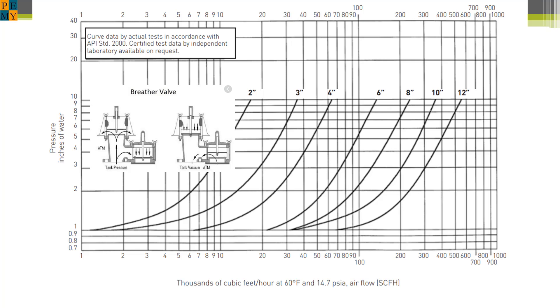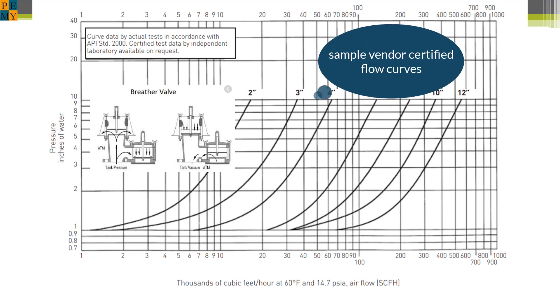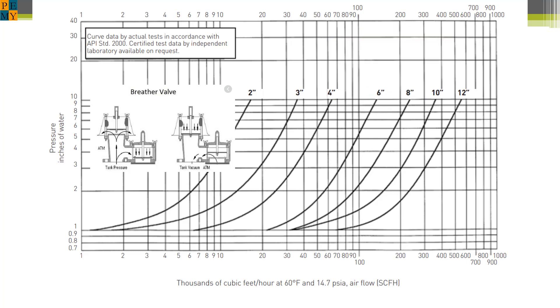In our scenario, a tank engineer breaks out API standard 2000 to size a PV valve. She determines the required normal and emergency venting requirements. She then contacts a vendor who provides certified flow curves along with a quote to ensure that she is getting a properly sized PV valve or emergency venting device.